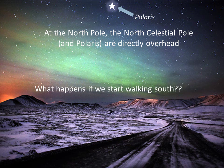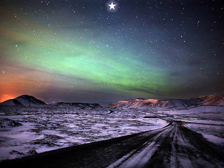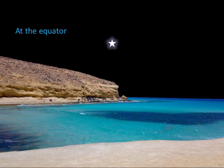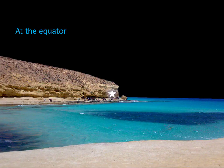Let's think about what happens to the location of Polaris and the north celestial pole if we start walking south. If we start walking south, Polaris will get lower in the sky. Since we're walking south, Polaris is behind us, above the northern horizon. As we keep walking, it gets lower and lower. If we walk all the way to the equator, Polaris will end up on our horizon. If we go below the equator, we won't be able to see Polaris anymore.